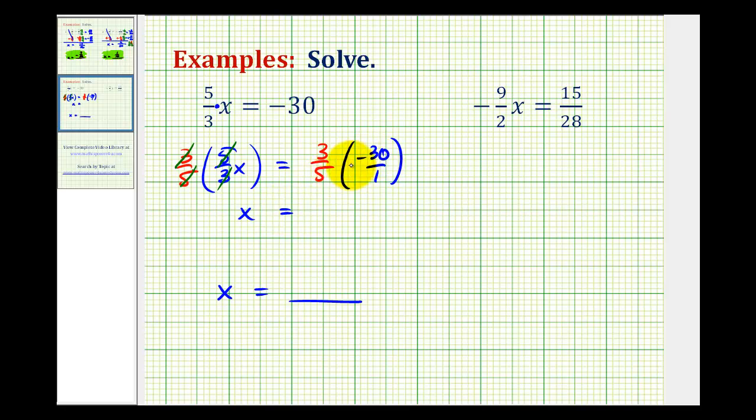Notice how we can simplify before we multiply. The five and negative 30 do have a common factor of five. So we have three-fifths times negative 30 as negative six times five. This five over five simplifies to one, so we're left with x equals negative 18 over one, or just x equals negative 18.